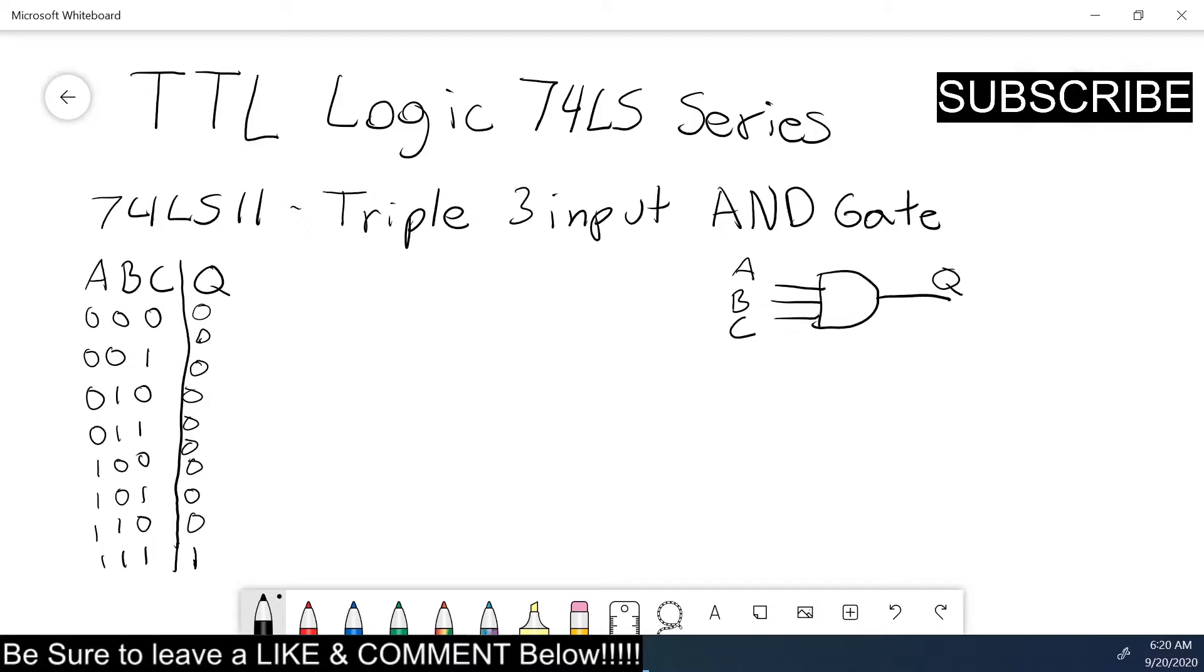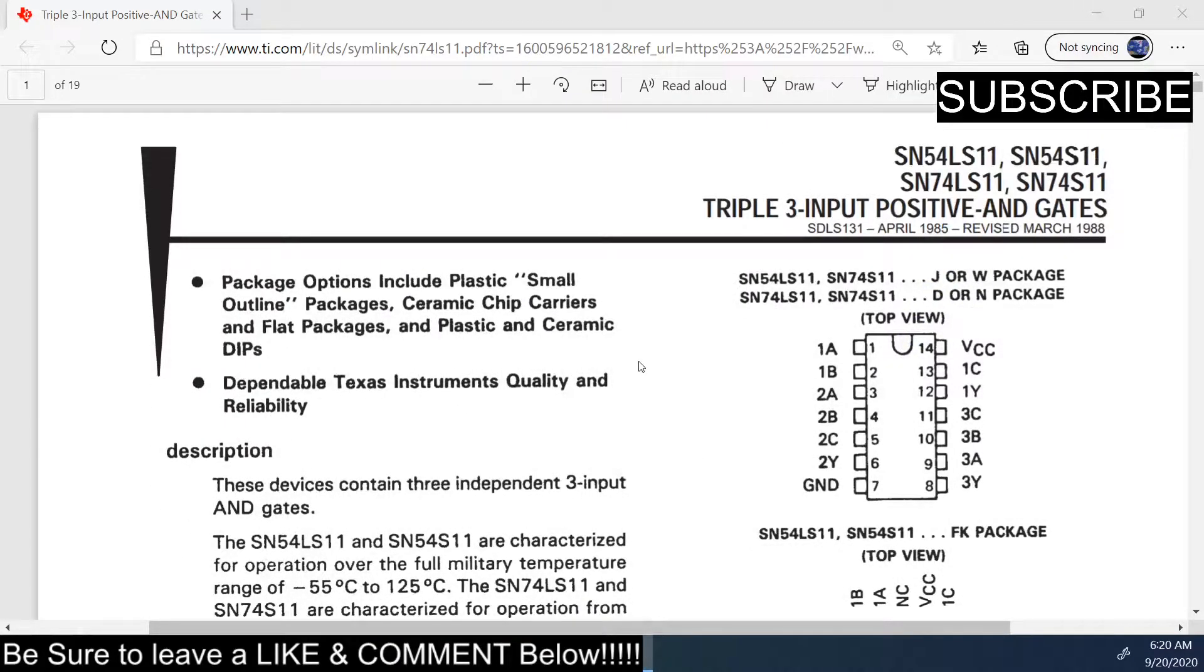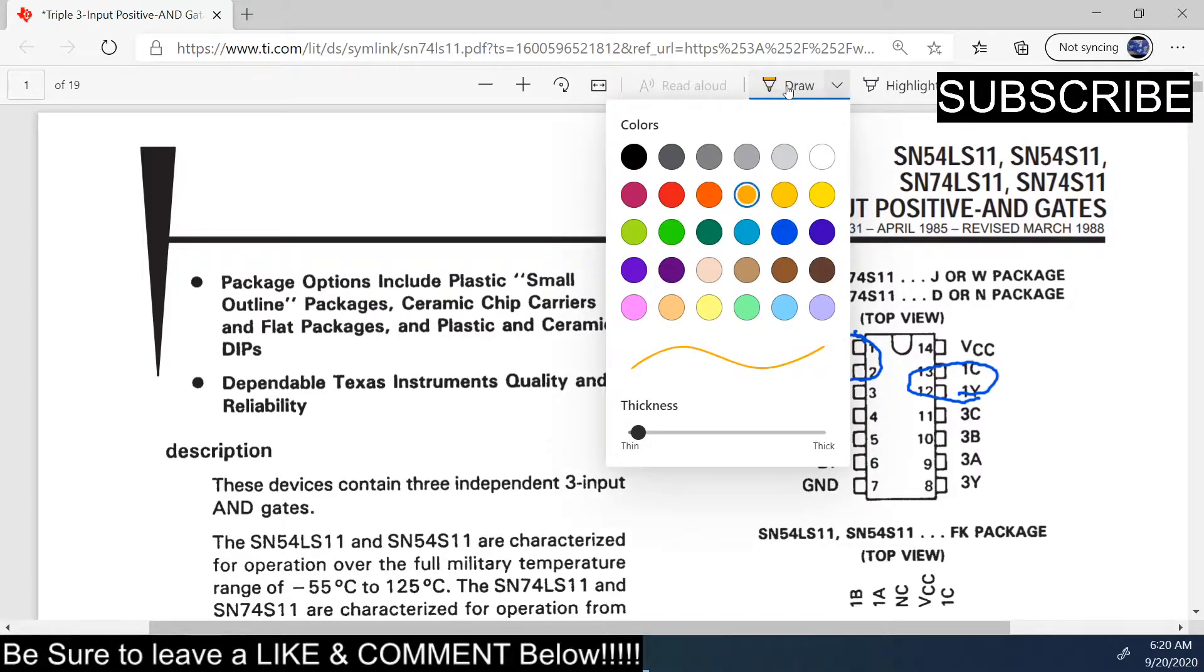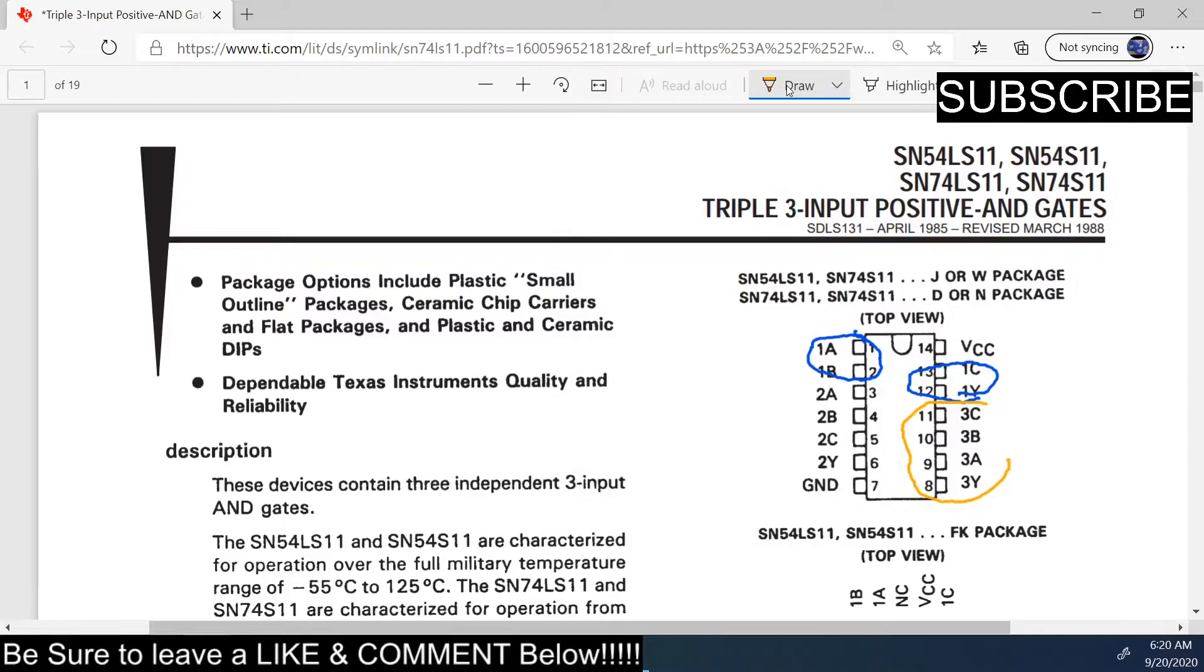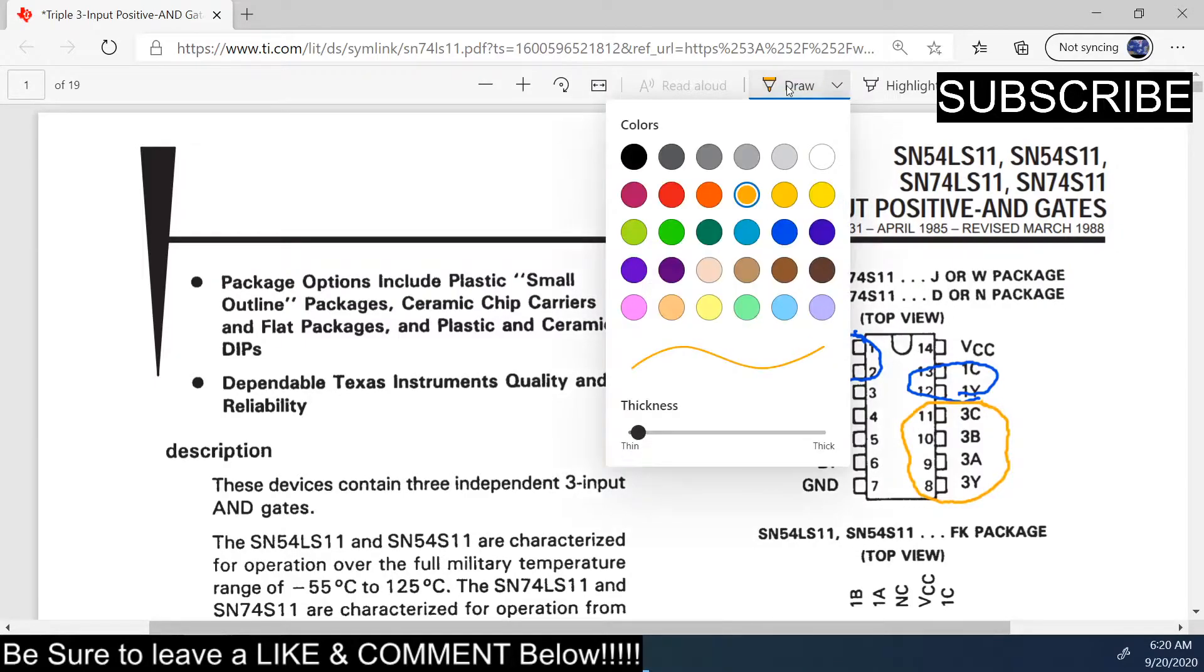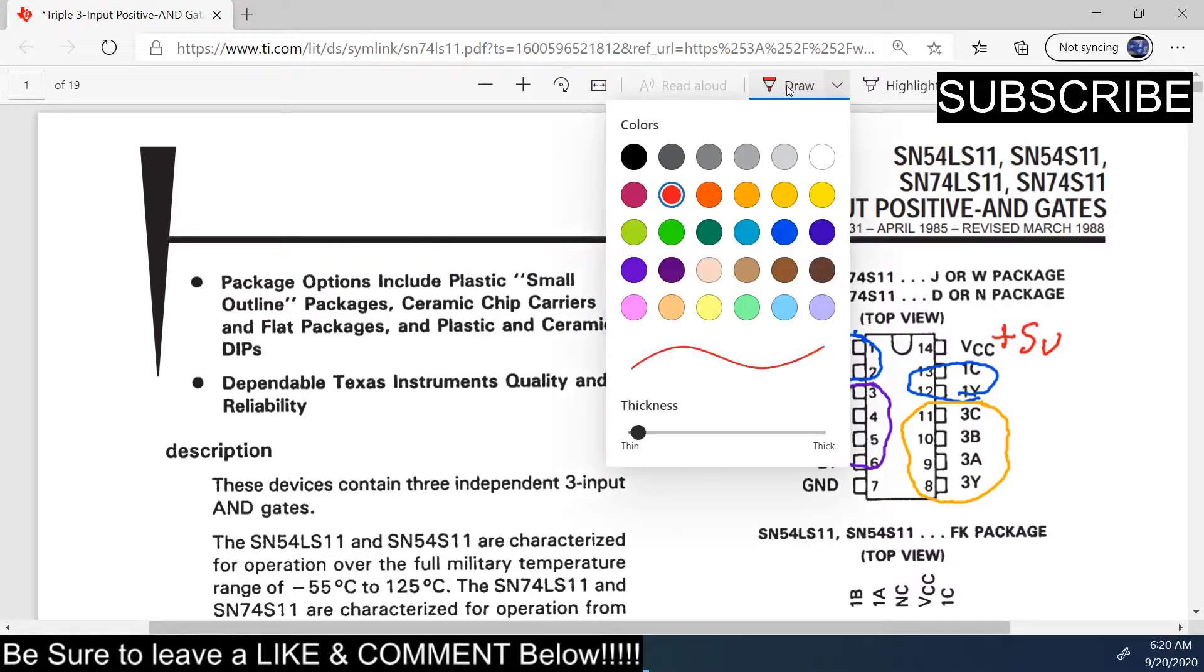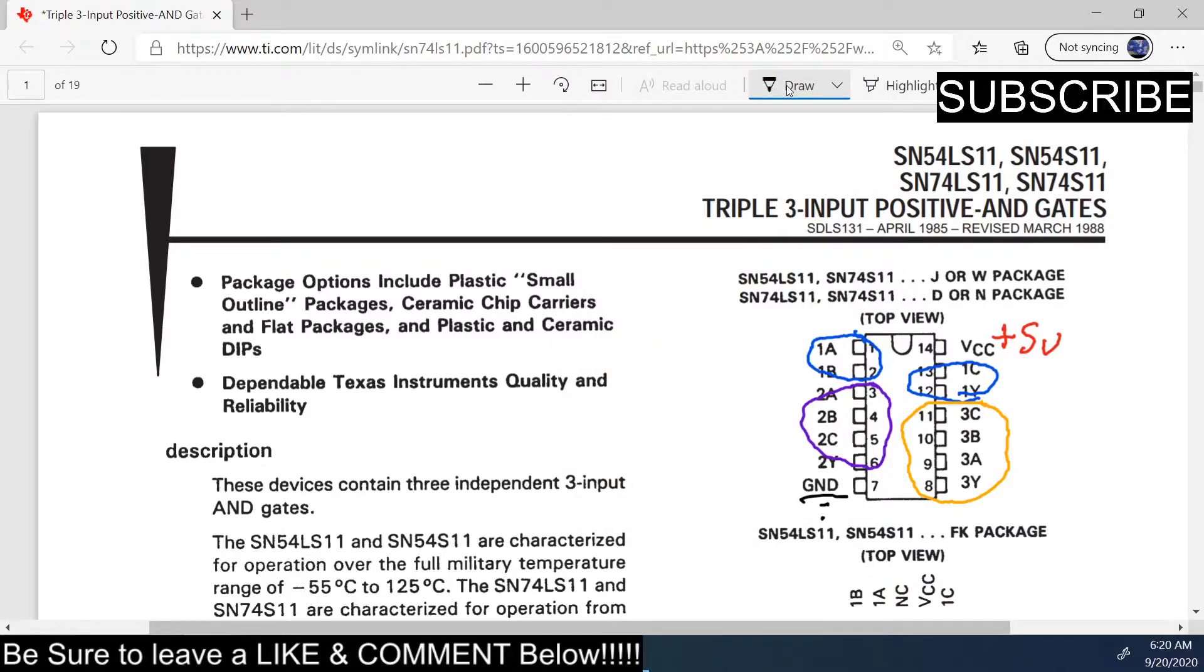So it's going to be all off and one on when all three are put down. Let's take a look at the data sheet. Here's the data sheet right here. In blue is your first input which is pin 1, 13 and 12, and your next input is 11, 10, 9, and 8, and 3, 4, 5, and 6, and then we're going to have plus 5 volts on VCC and ground is ground.